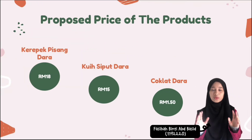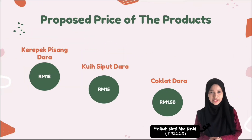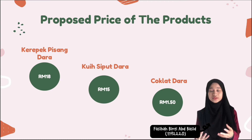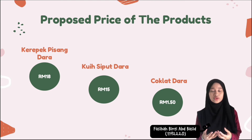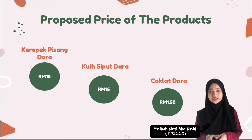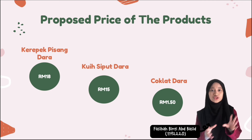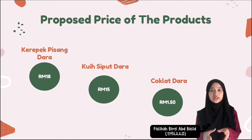For the price of our products, we decided to put a price of 18 ringgit for keripik pisang, where it comes with a jar, making it convenient to carry and store. The price of kuih sibuk is not too pricey compared to other competitors. For coklat dara, made with premium ingredients like chocolate and biscuit, the price is about 1 ringgit 50 cents, so that everyone can purchase and enjoy.